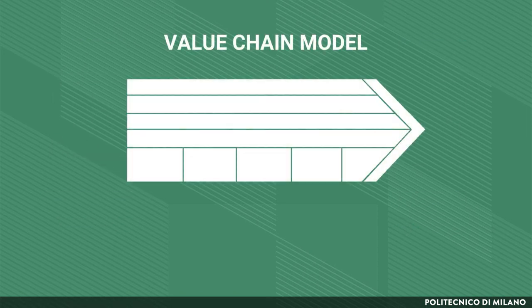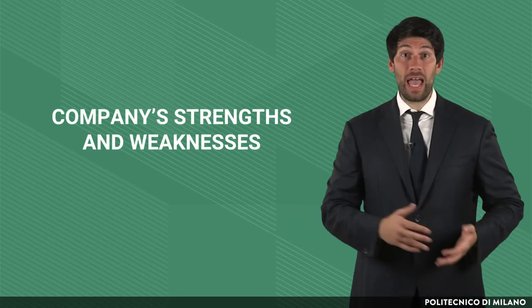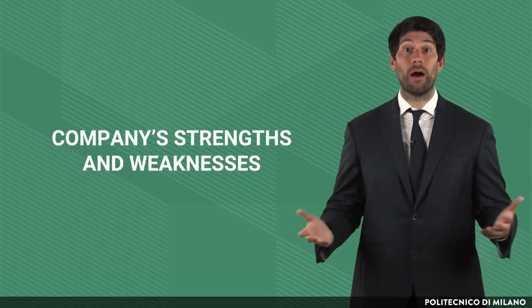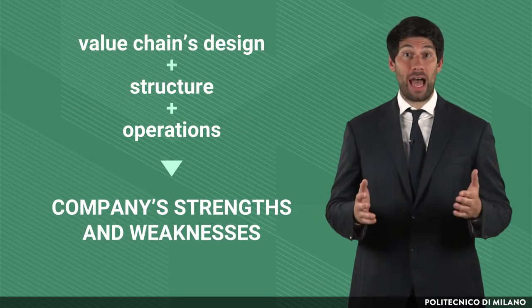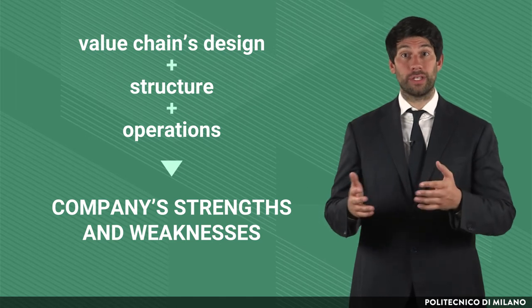The value chain model offers a fine-grained representation of all the activities carried out within the company, and also of internal and external links among the activities themselves. The idea at the basis of it is that the strengths and weaknesses of a company are linked to the way the value chain is designed, structured and run.